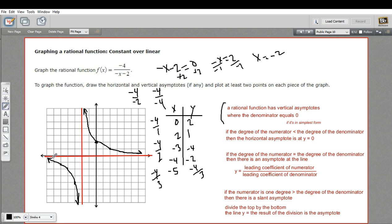There are our two arms of our rational function approaching the asymptotes on either side. So that is how to graph a rational function.